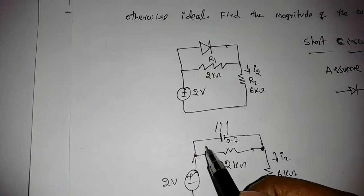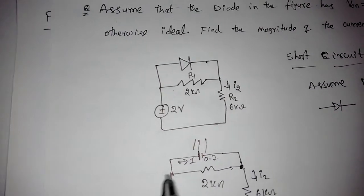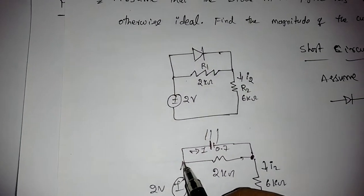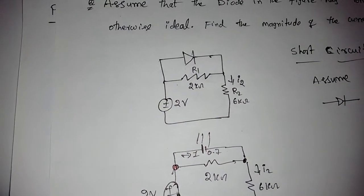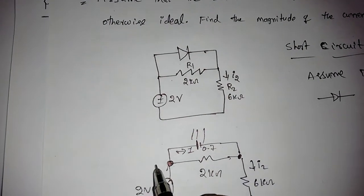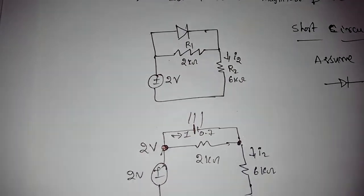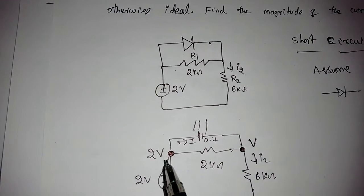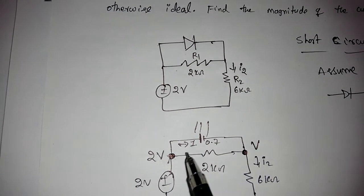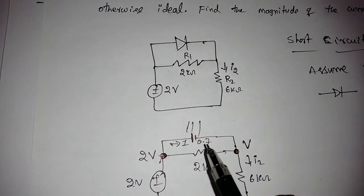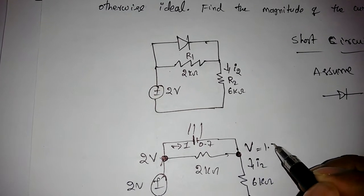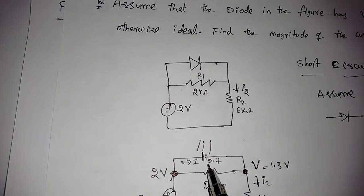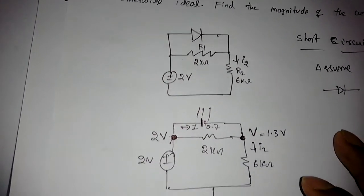We need to find currents I and I2. The current flows from anode to cathode for forward bias. Observing the circuit, the node directly has 2V. Subtracting the 0.7V diode drop gives a node voltage V of 2 minus 0.7, which equals 1.3V. This means the voltage drop across the 2 kΩ resistor is 2 minus 1.3 equals 0.7V.